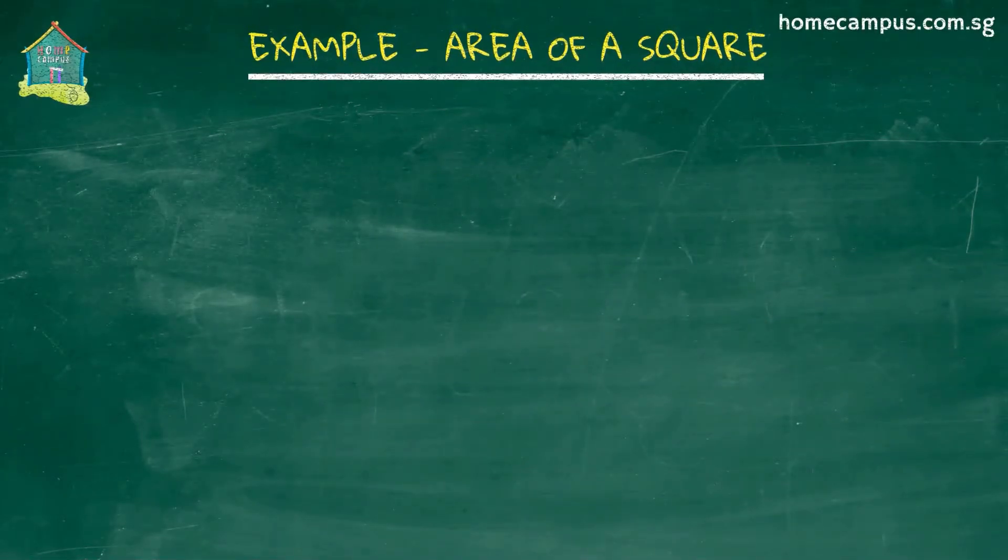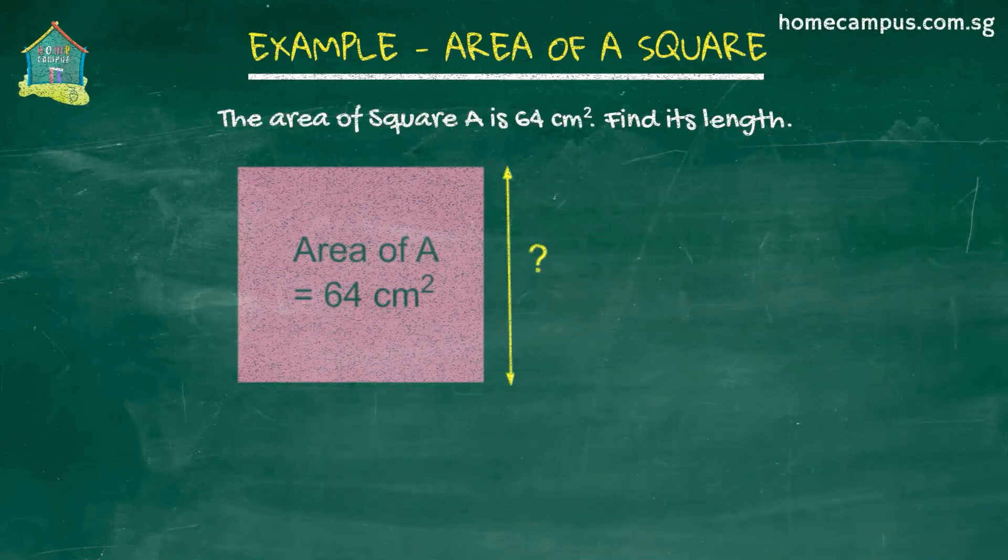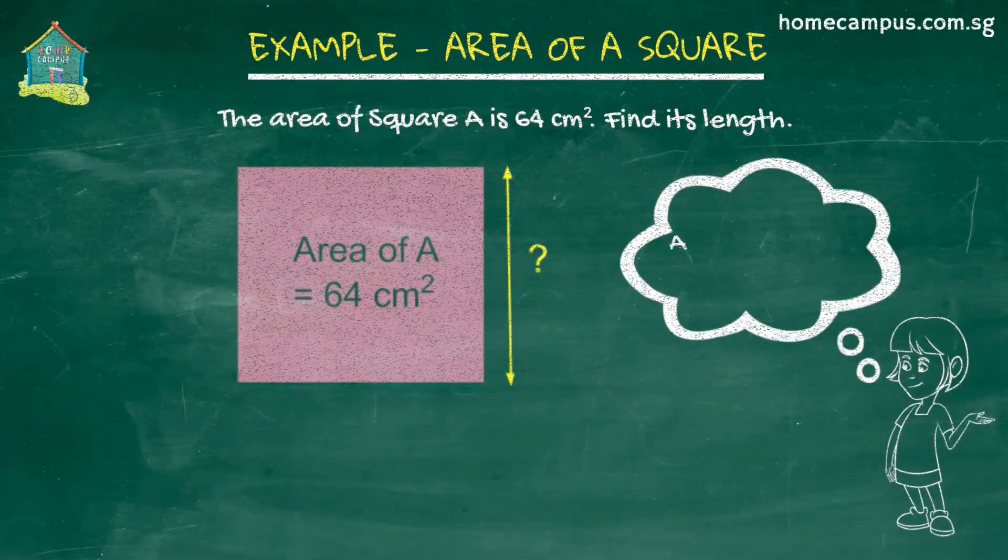Let us look at a different kind of example. The area of square A is 64 centimeters square. Find its length. We know that the area of a square is side times side, or length times length.